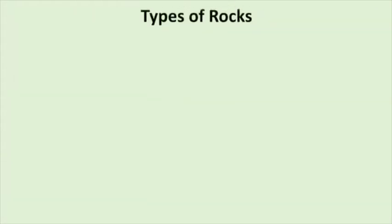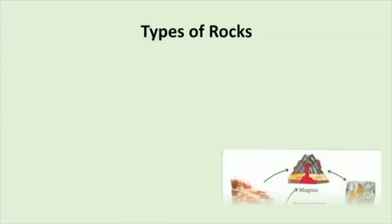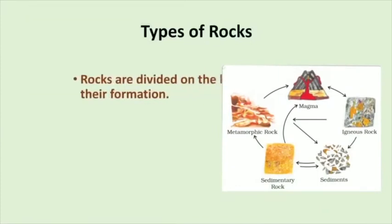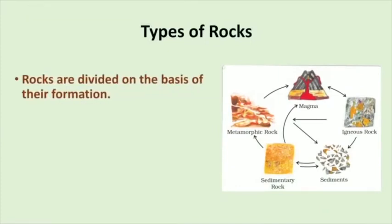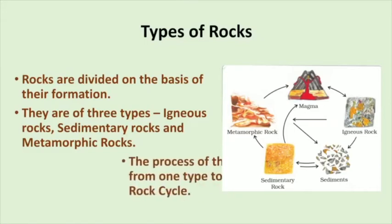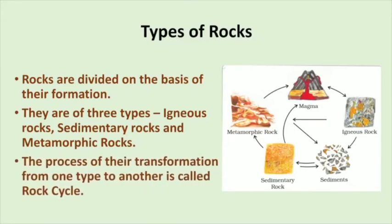Now let's talk about different types of rocks. Rocks are of various types and their division is done on the basis of their formation. There are three types of rocks: igneous rocks, sedimentary rocks and metamorphic rocks. The process of transformation of one type of rock to another type is called the rock cycle.